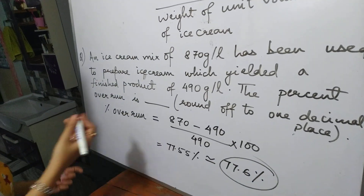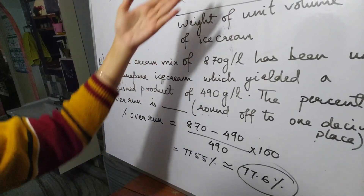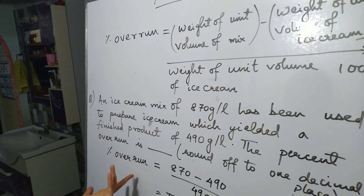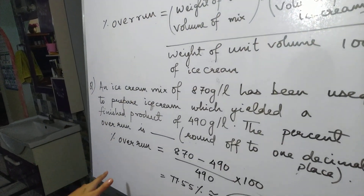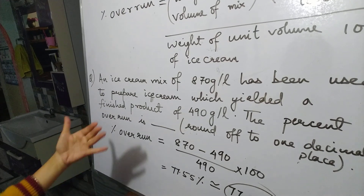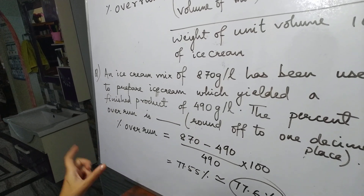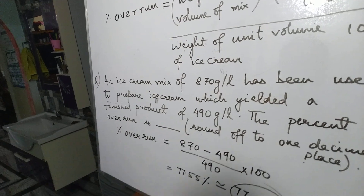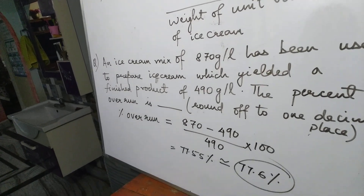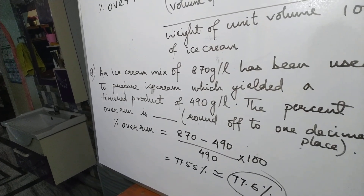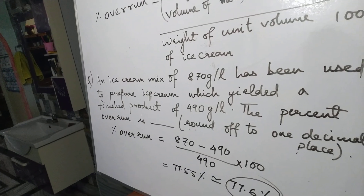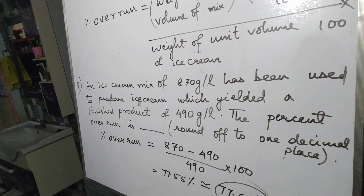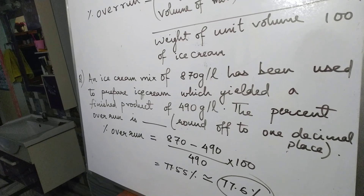Look at the question and look at the answer — it is very simple. Just a single-line formula to remember and you will get two marks, or one mark depending on where the question is allotted. As you all know, the GATE exam is very close — it is in the month of February. So prepare yourself and go through each and every topic. Revise each and every topic and practice more and more questions.